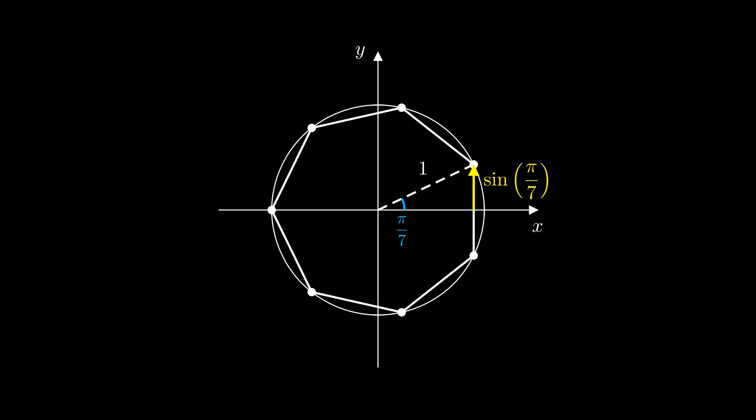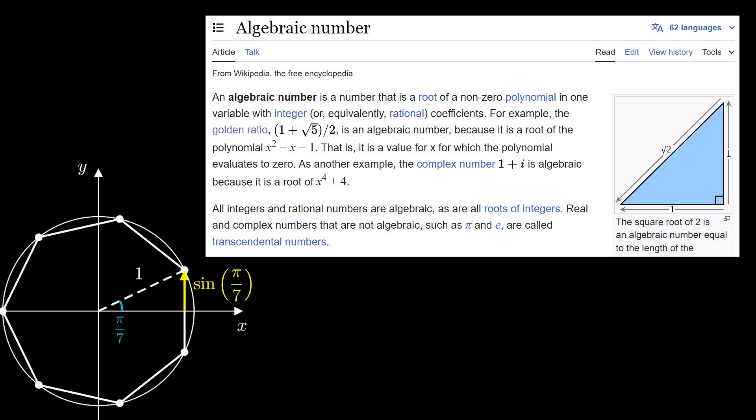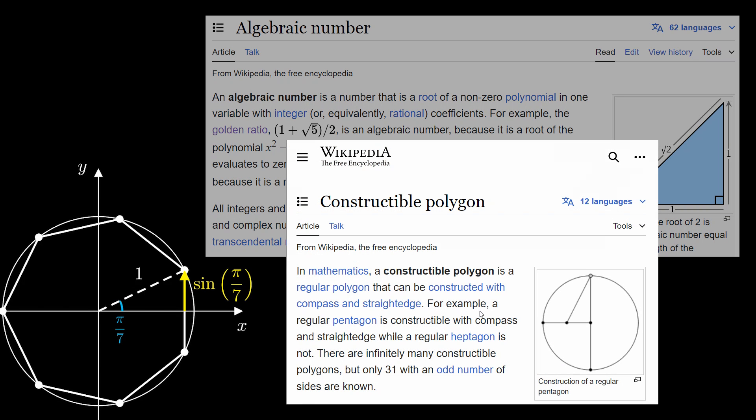Of course, sine of π/7 is a real number, it's this length here. But the seven-sided regular polygon is not constructible, meaning it cannot be constructed with a straight edge and compass.